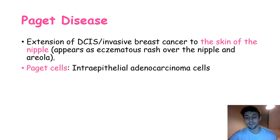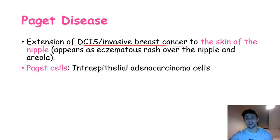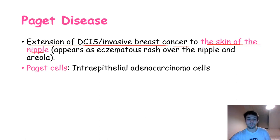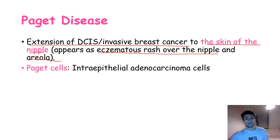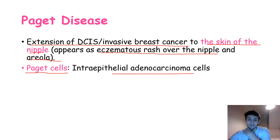Paget's disease of the breast is when a lesion — which can be ductal carcinoma in situ or invasive breast cancer — extends from the inside of the breast to the skin around the nipple. It appears as an eczematous rash over the nipple and areola. On histology, you can find what are called Paget cells, which are intraepithelial adenocarcinoma cells.